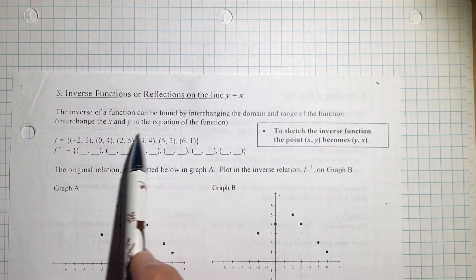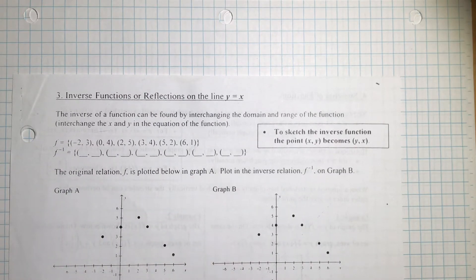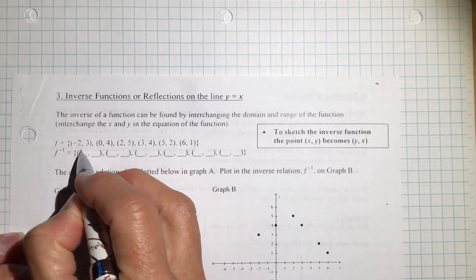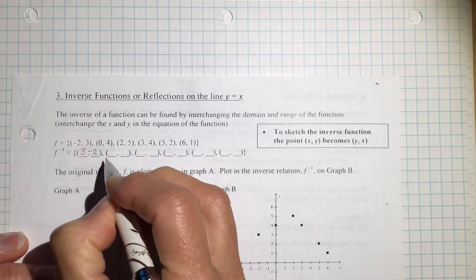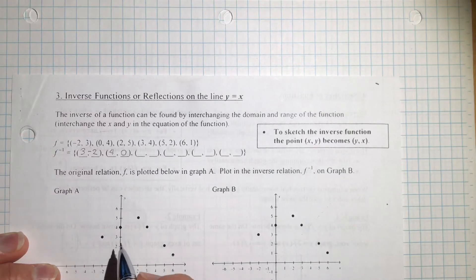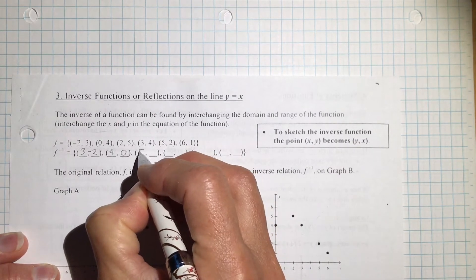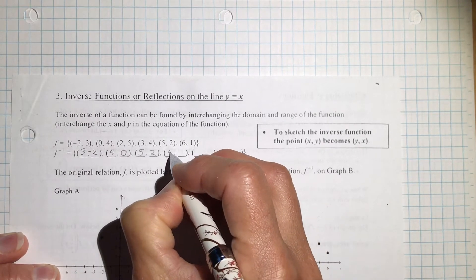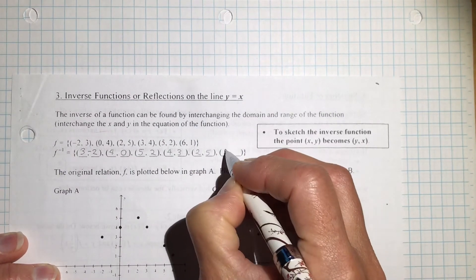It's so easy to find an inverse when you've been given a series of points, because all you have to do is switch the x and y variables. So here I have minus two, three — that becomes three and minus two. This one is zero and four, so I switch them: y becomes x and x becomes y. And if I'm switching all the variables, I'm also going to be switching the domain and range. So two five becomes five two, four three becomes three four, five two becomes two five, and six one becomes one six. Very simple.